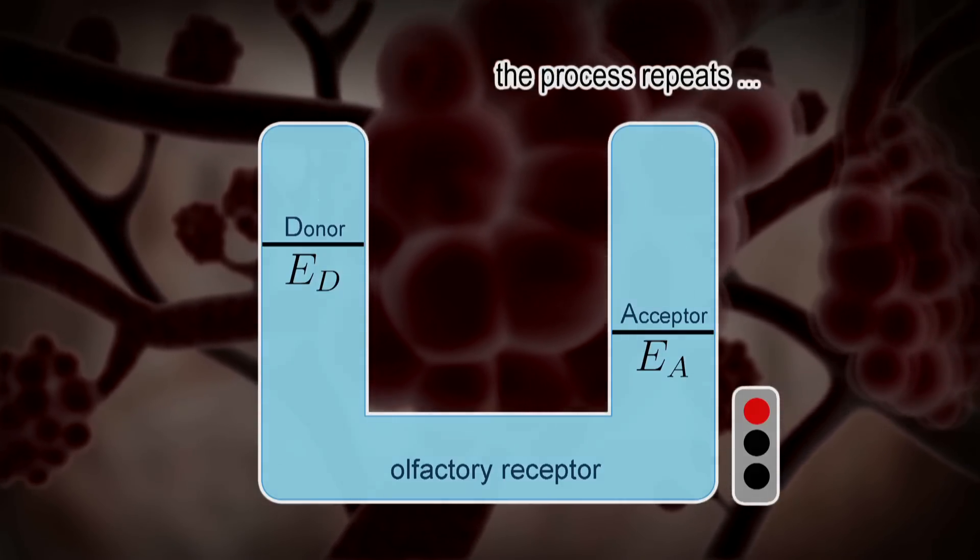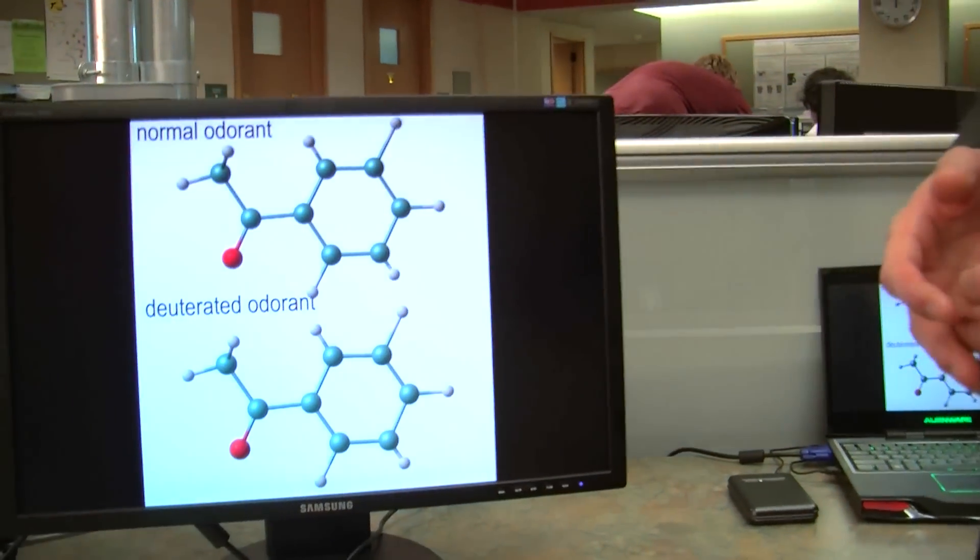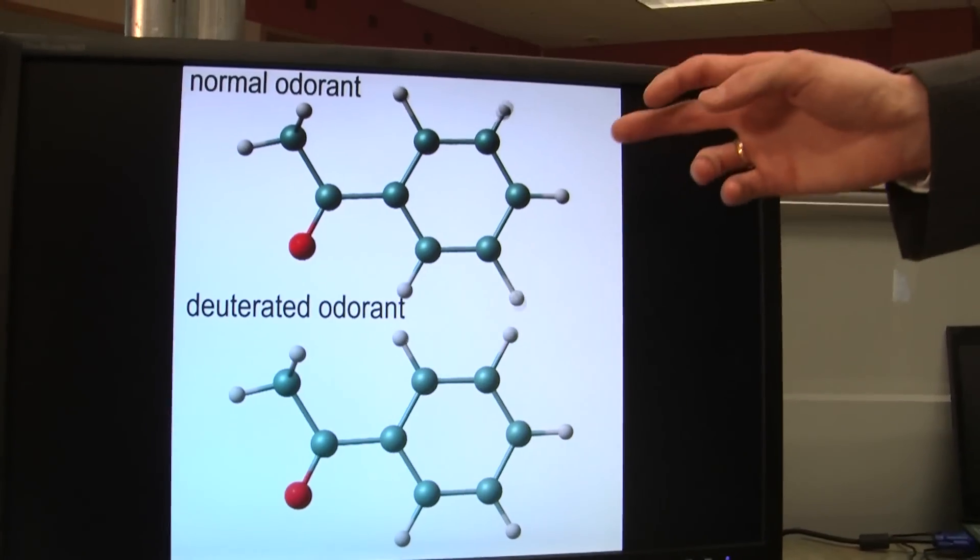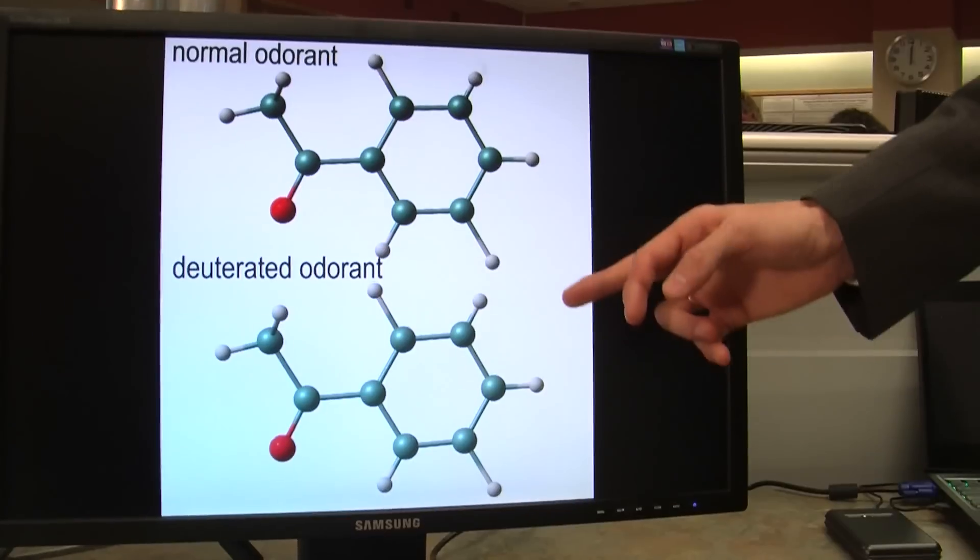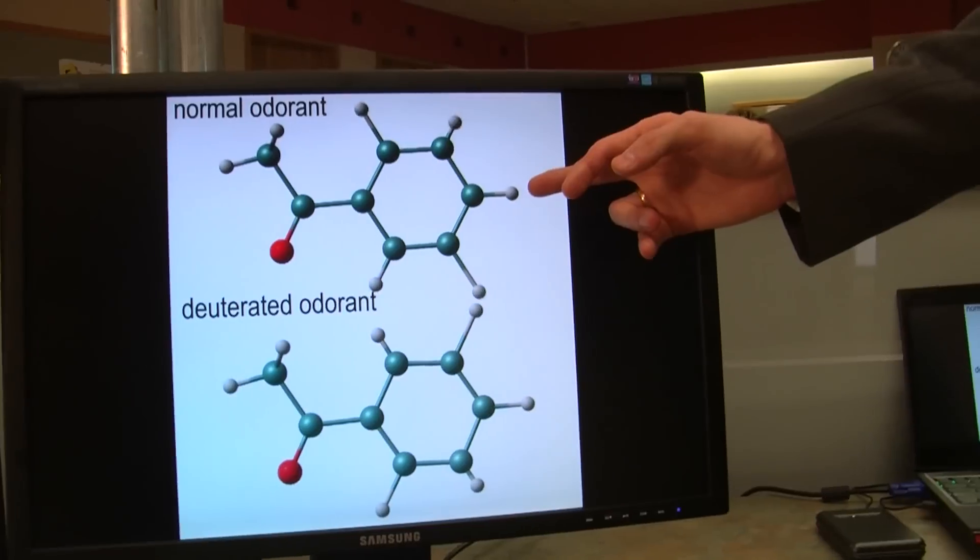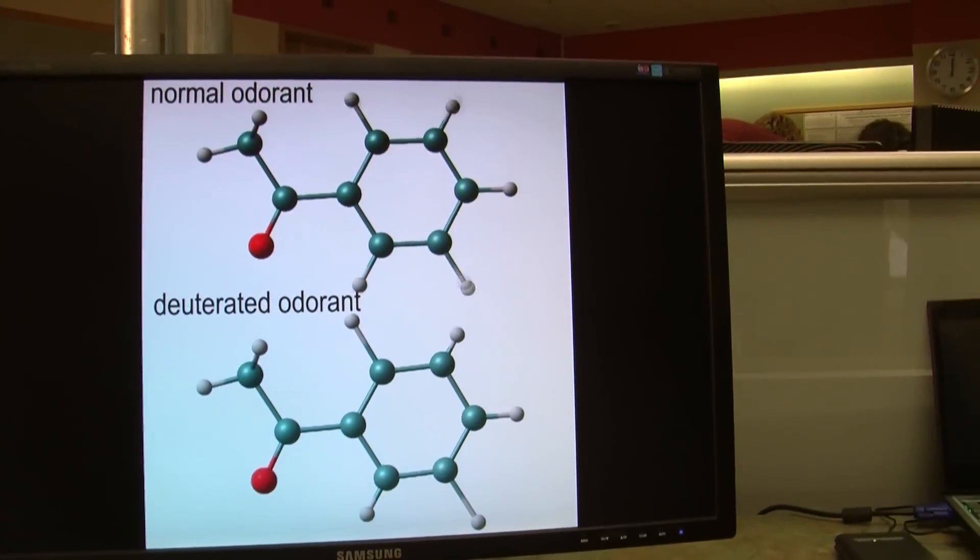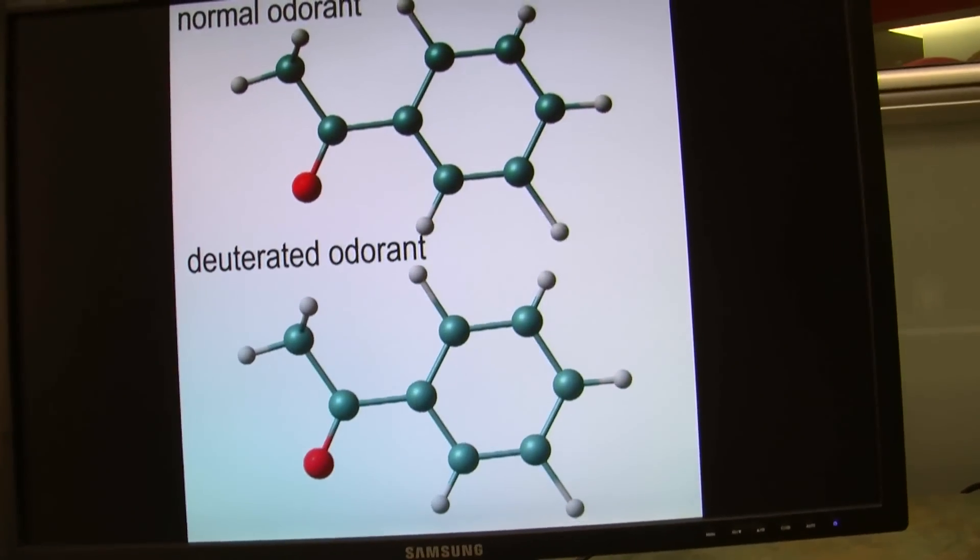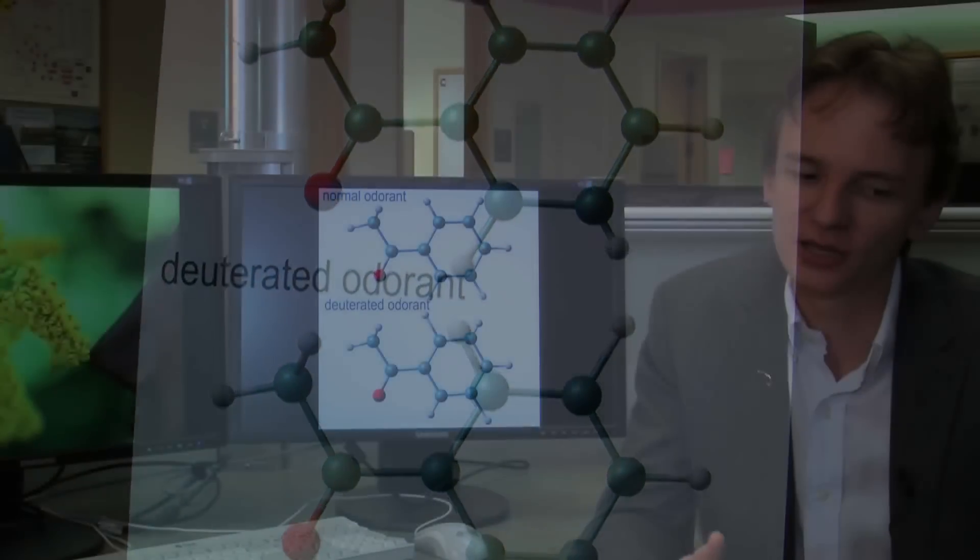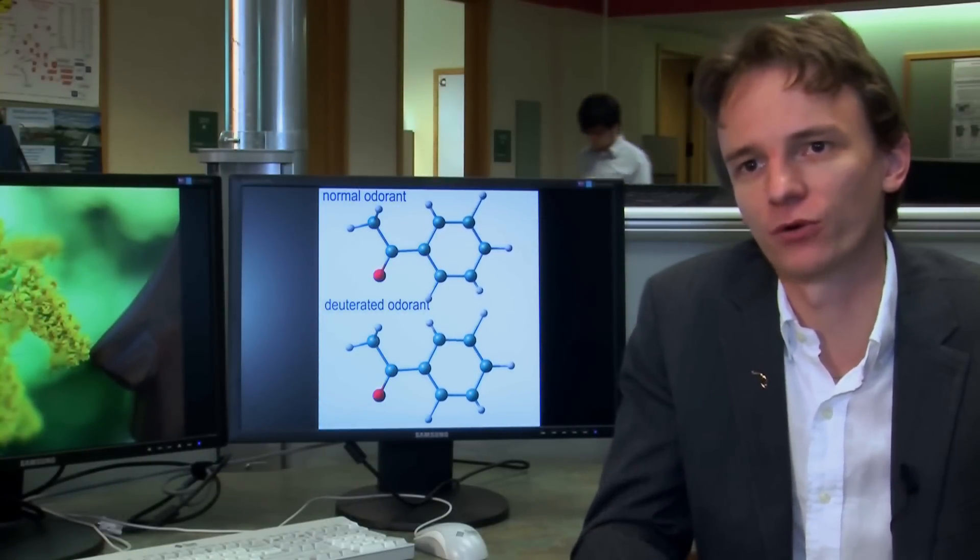But even if the shape of two molecules is identical, sometimes the constituent atoms may be different. Here you can see two odorant molecules and as you can see they have absolutely the same shape. But because the second molecule shown here contains deuterium compared to the hydrogen here, the vibrational frequency for this molecule is lower. So even if the shape of the molecules is the same, the chemical reactions would be different. We believe that there is a complicated interaction of these two factors and both of them matter and are important for olfaction.